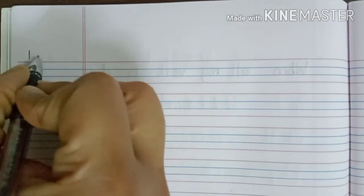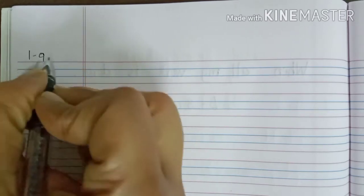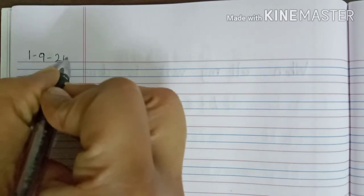What is the date today? Today's date is 1st September. So, we will be writing 1-9-20.